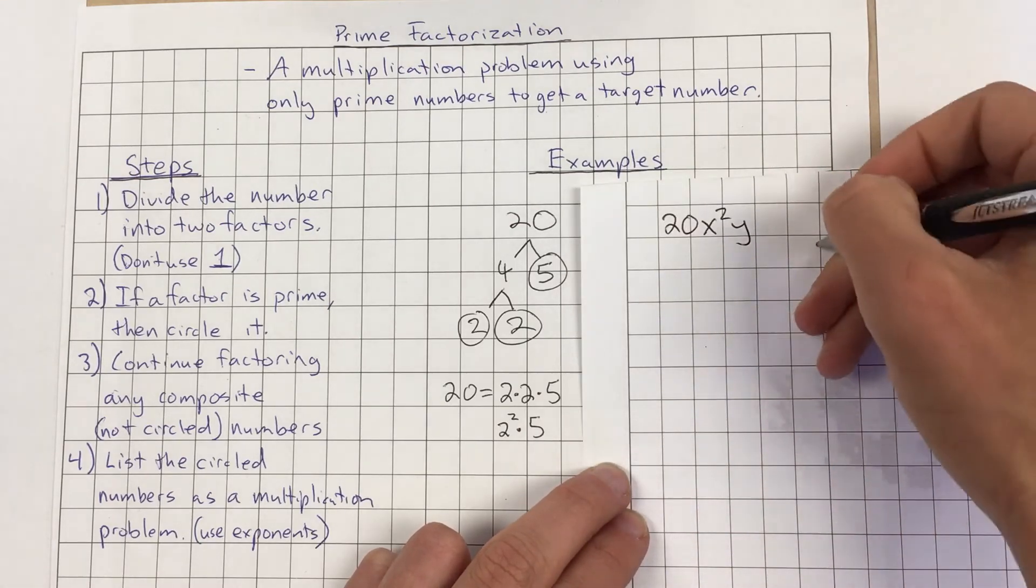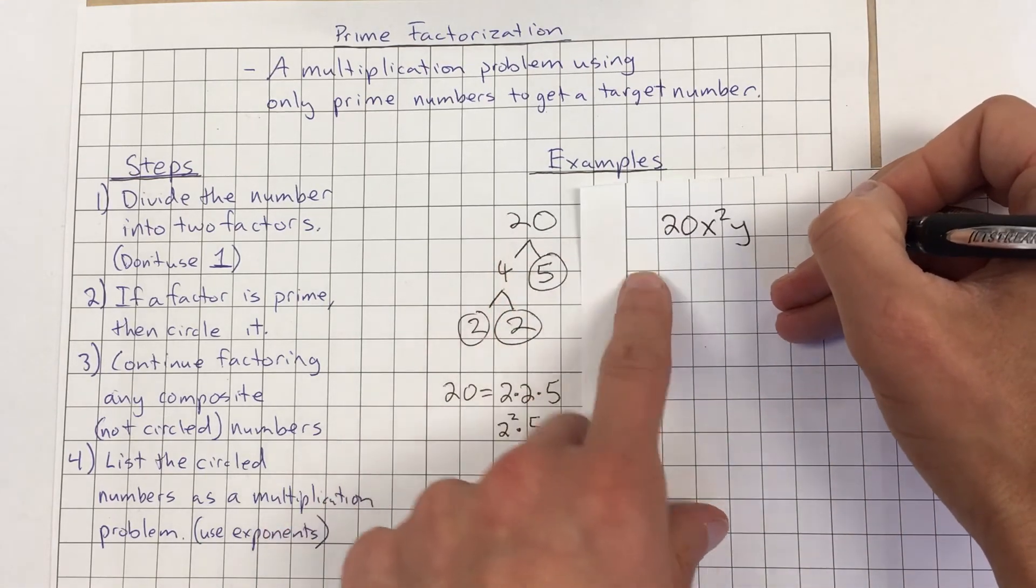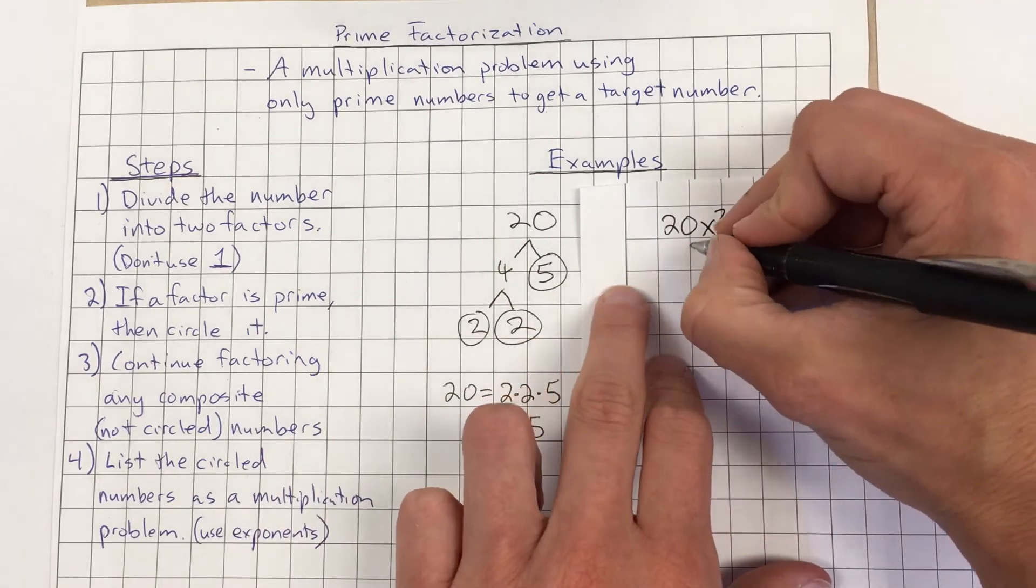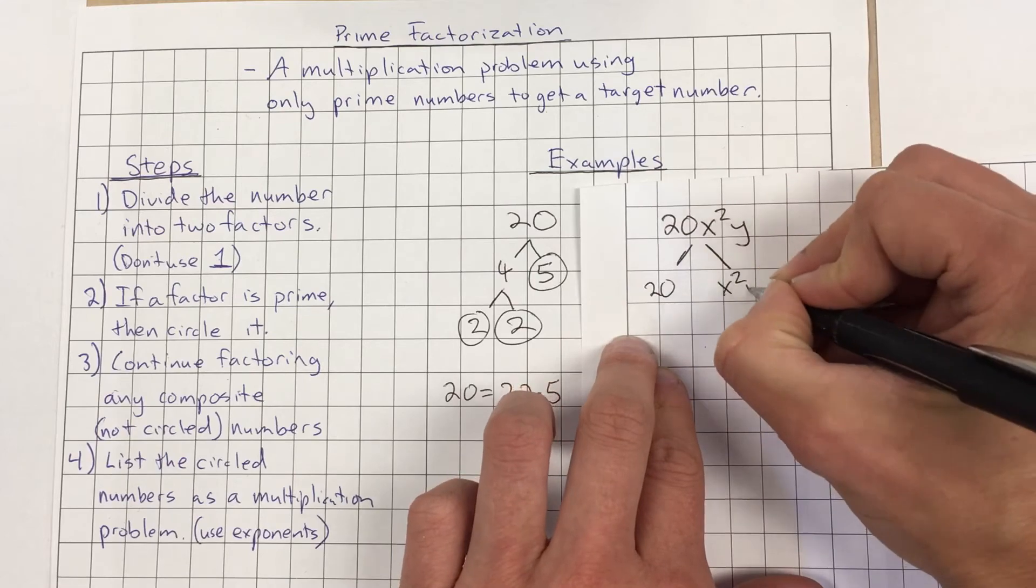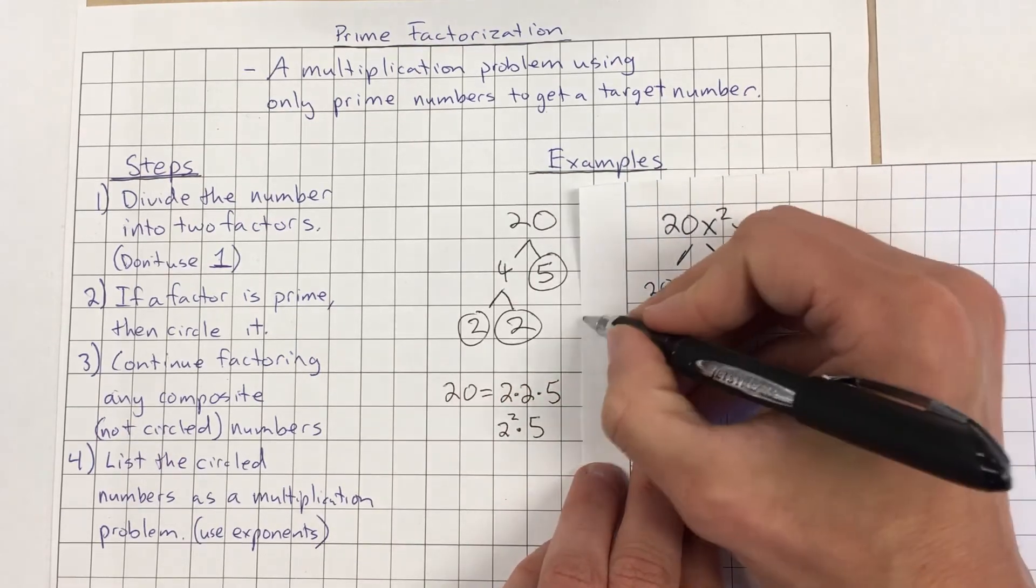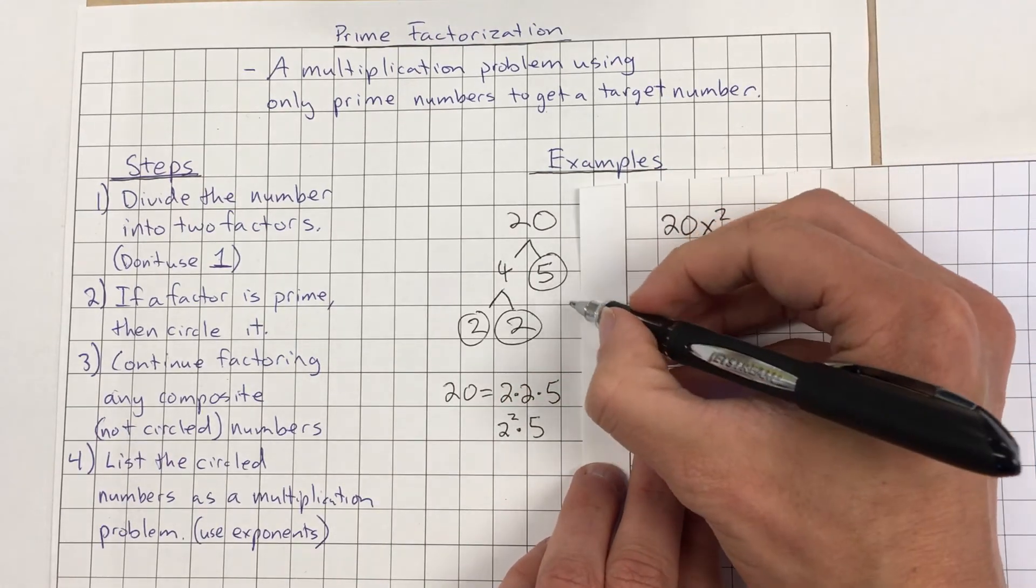We're going to treat that kind of just like the 20. We're going to break off the number and the variables into two parts. We've got 20 and then we've got x squared y. Now we're going to factor 20 just like we did before. And I'm going to show you we could actually do it in a different way.